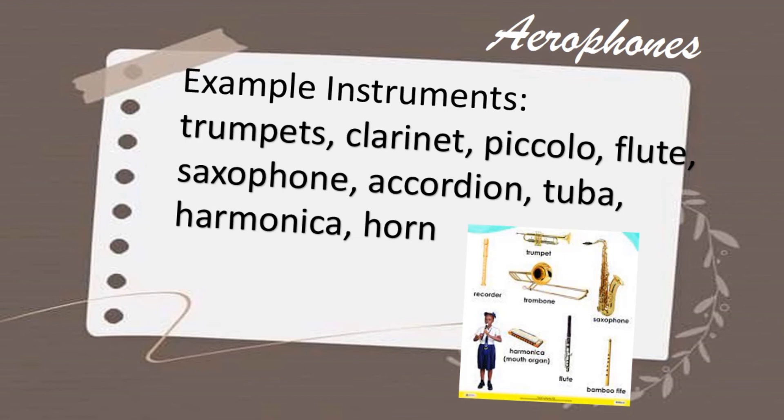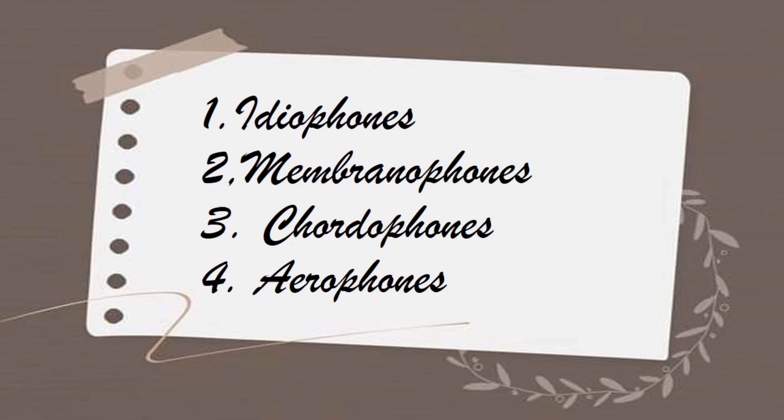Example instruments for aerophones include trumpet, clarinet, piccolo, flute, saxophone, accordion, tuba, harmonica, and horn. Those are the four classifications of musical instruments by the Sachs-Hornbostel system. Always remember all the keywords, as these classifications will appear in your activities in every music class — you need to master and study these classifications.